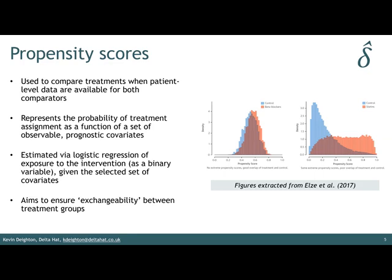The figure on the right shows that quite nicely — there's little overlap between these groups, and any statistical adjustment makes it difficult to control for this level of bias because the baseline characteristics are clearly quite separate between the two groups. There are very few patients in the statin group who have a propensity score close to zero, which is where most of the control patients are.